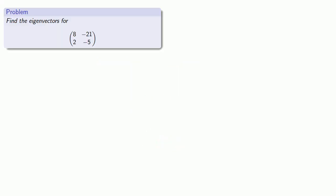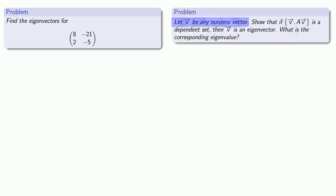So let's try and find the eigenvectors for this 2 by 2 matrix without using determinants. This all started when we considered v to be any nonzero vector. If {v, Av} was a dependent set, then we had an eigenvector.